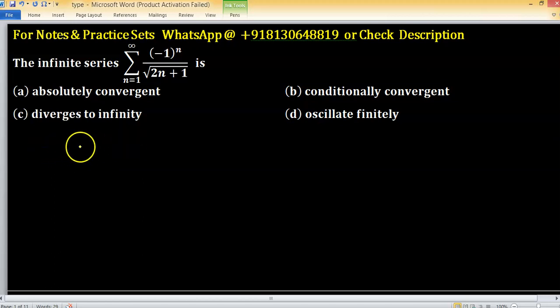If I make this series a positive term series, I can write the summation from n equals 1 to infinity of 1 upon under root 2n plus 1. This one you can take as un.